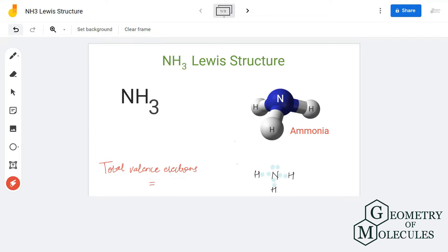Ammonia has one atom of nitrogen and three atoms of hydrogen. To know the Lewis structure of ammonia, we will first calculate the total number of valence electrons in NH3.